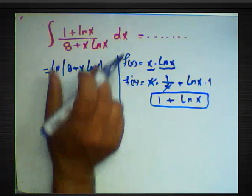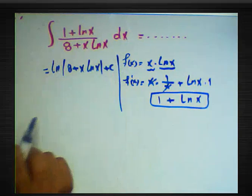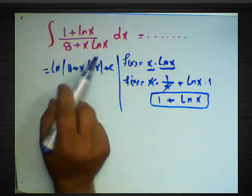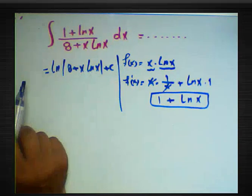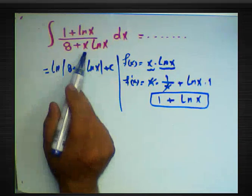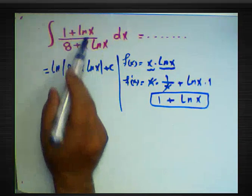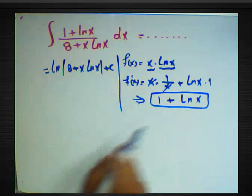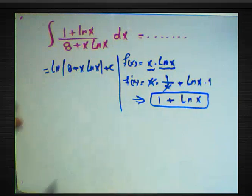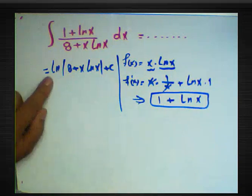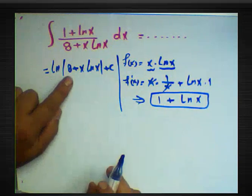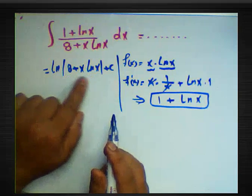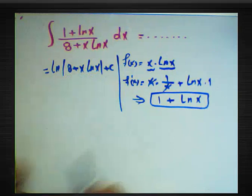Therefore, the integration of (1 + ln x) / (a + x·ln x) dx gives ln|a + x·ln x| + C, because the numerator is the derivative of the denominator. The result is ln|a + x·ln x| + C.